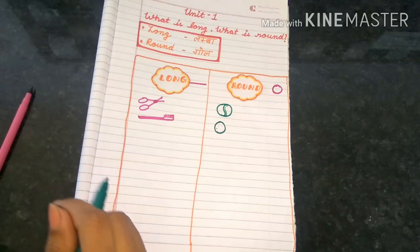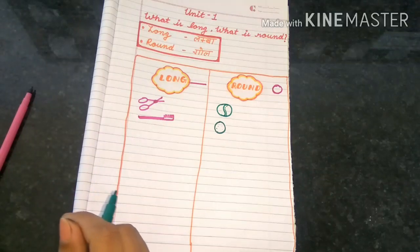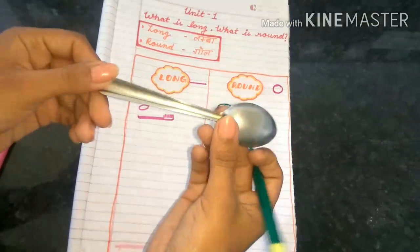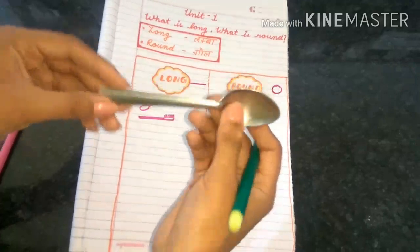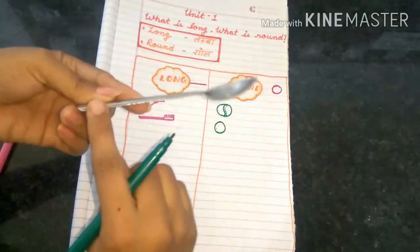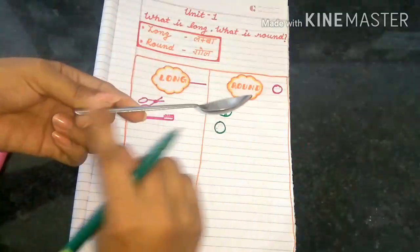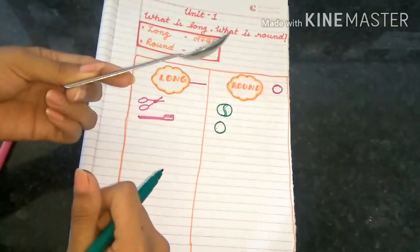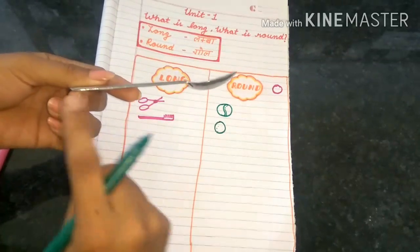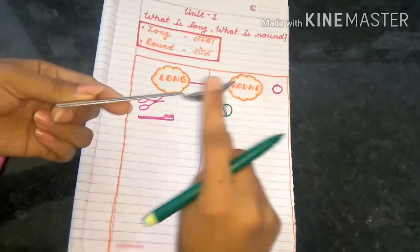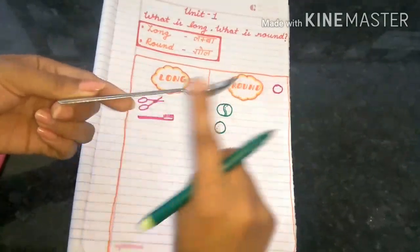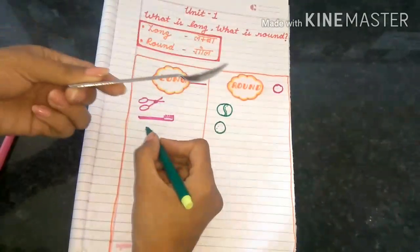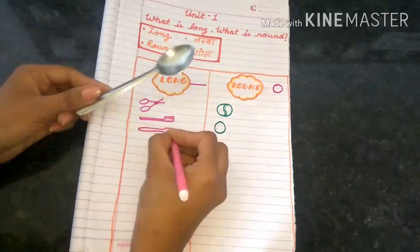So our next object is this. It's a spoon. How is it looking? Is it looking long or is it looking round? Yes, it is looking long. We will draw it on the long side.